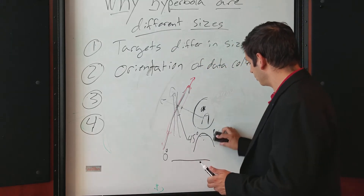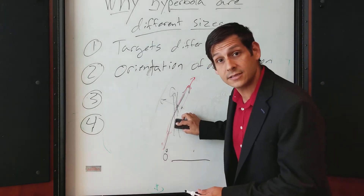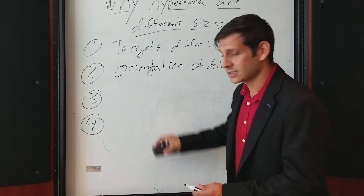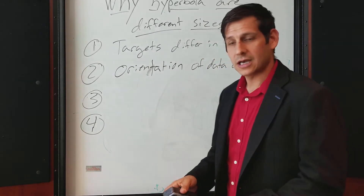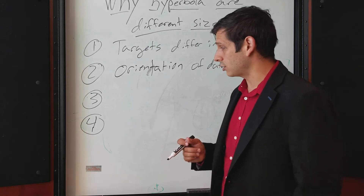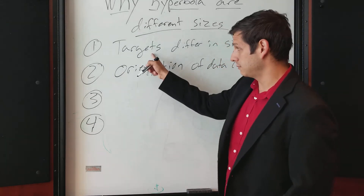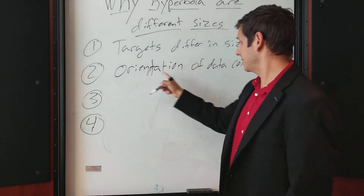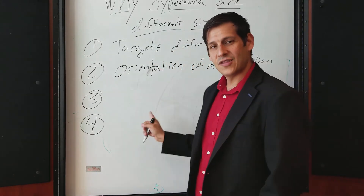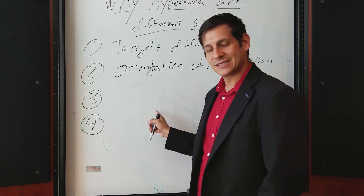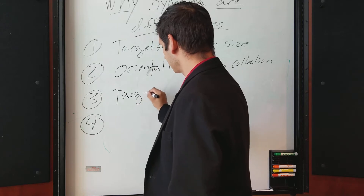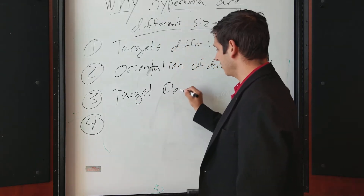If you're going to do some sort of hyperbola fit, you're going to want to do it at 90 degrees. Check our other videos for more information on that, or join us at LearnGPR.com for one of our training programs. The third reason that hyperbola sizes vary is target depth.